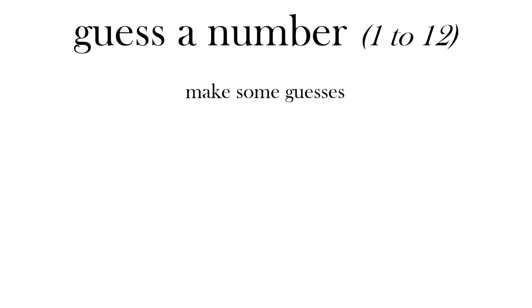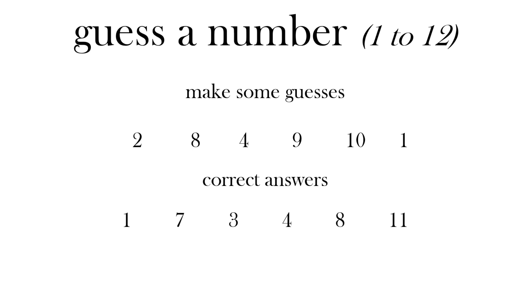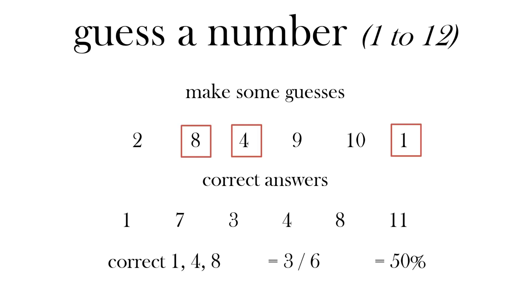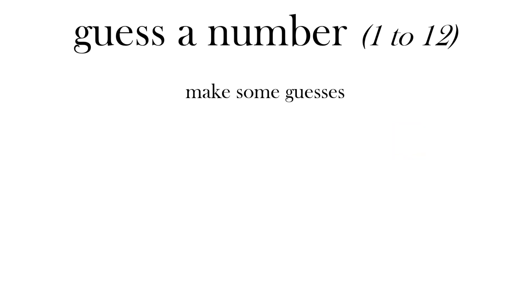Guess a number from 1 to 12 - there are a few numbers here, so make some guesses. The guesses are: 2, 8, 4, 9, 10, 1. Let's have a look at the answers: 1, 7, 3, 4, 8, 11. How many correct? So 8, 4 and 1 were correct - that's 3 out of 6, which is 50%.